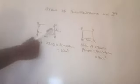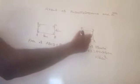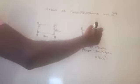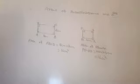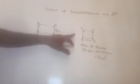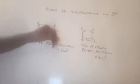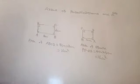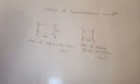Clearly we can say that these two figures are not congruent, because all the corresponding angles are equal but the sides are not equal. So these two figures are not congruent, but the areas of these two figures are equal. If the areas of the two figures are equal, it need not mean they are congruent to each other.